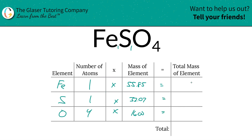Now we multiply across each row to find the total mass of each element in the compound. The total mass of iron is 55.85, the total mass of sulfur is 32.07, and the total mass of oxygen is 64.